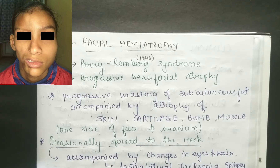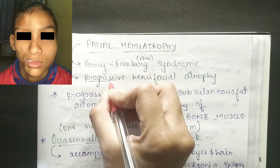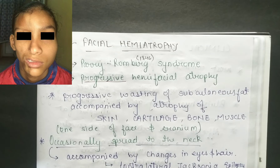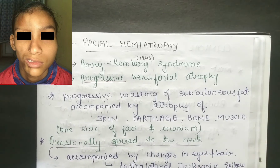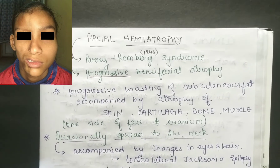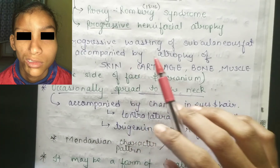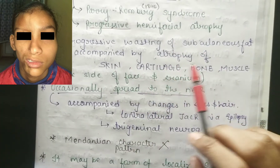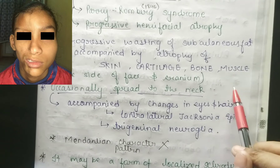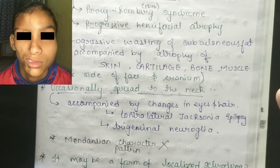It is also called progressive hemifacial atrophy. Progressive means it can be chronic and affect your body parts. Progressive wasting is accompanied by atrophy of skin, cartilage, bone, and muscles, with one side of the face or cranium being affected.